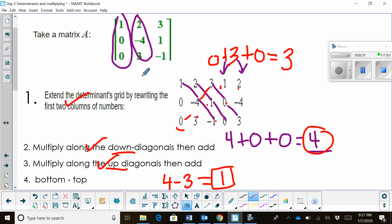So this matrix has a determinant of 1. And that's how you find the determinant using the diagonal method.